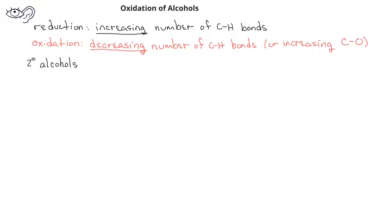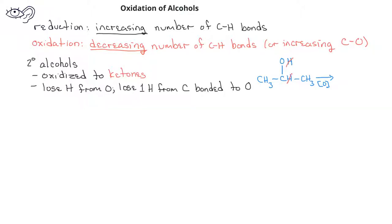Secondary alcohols can be oxidized to a ketone functional group. In these reactions, the secondary alcohol will lose a hydrogen from the oxygen as well as one hydrogen from the carbon bonded to the oxygen.